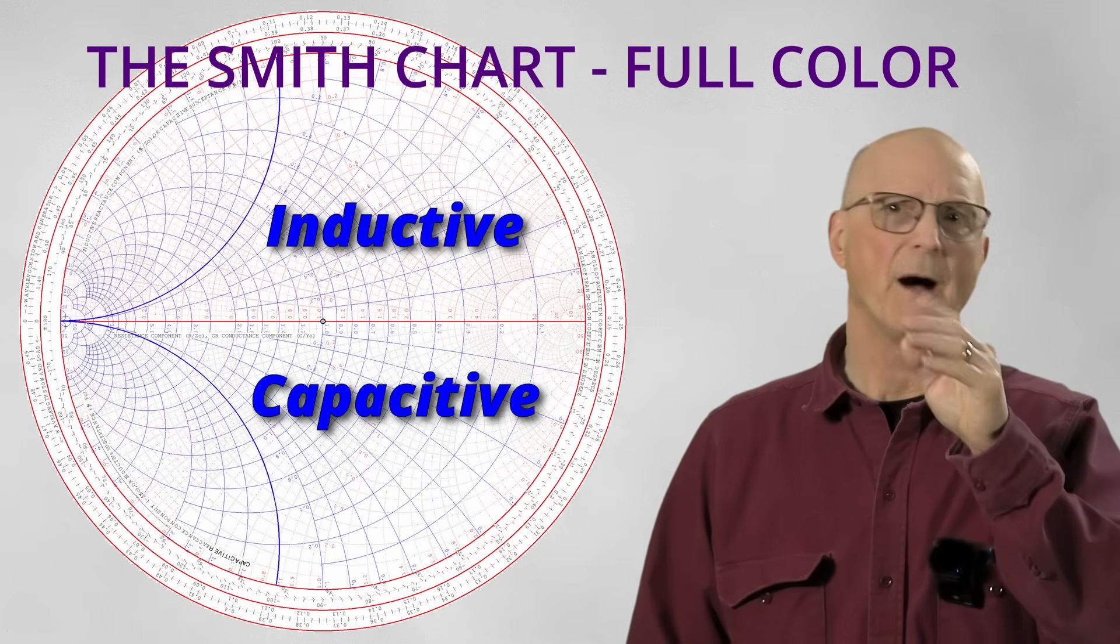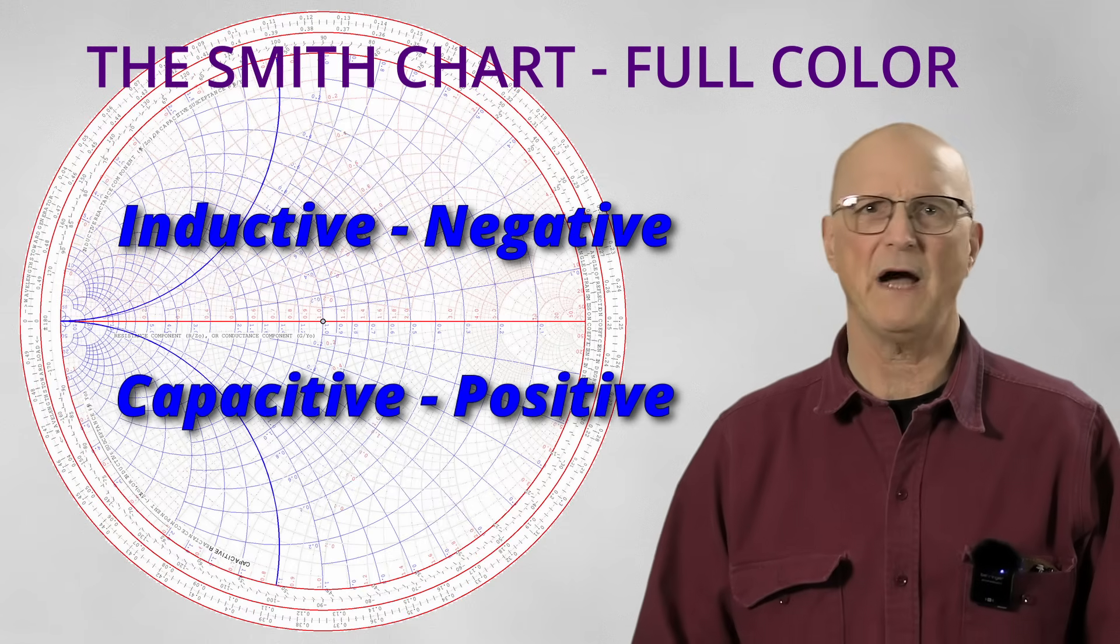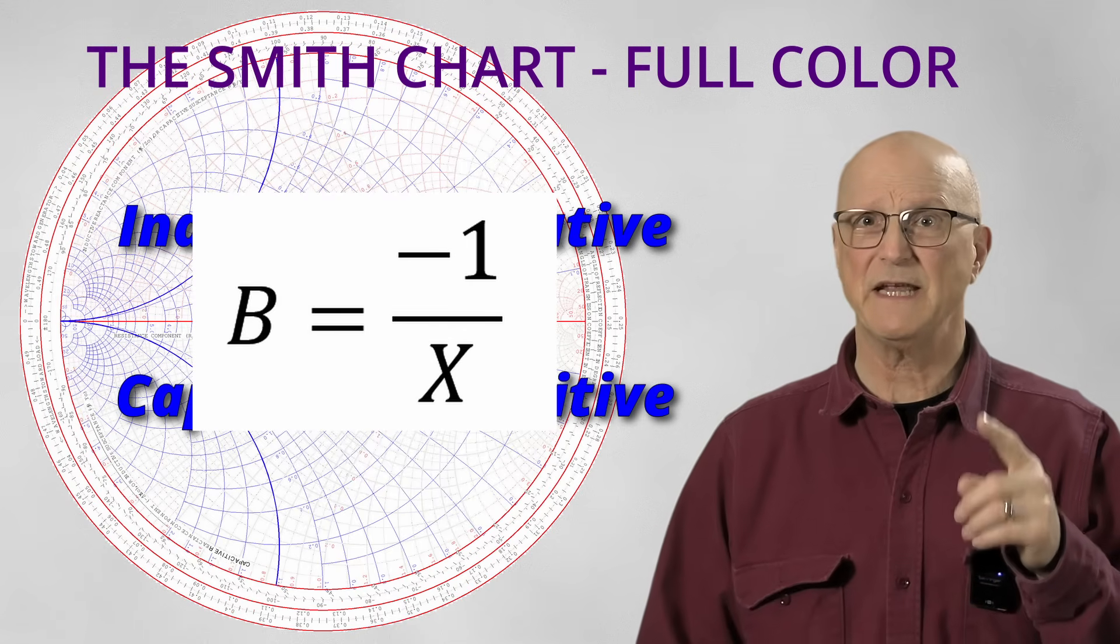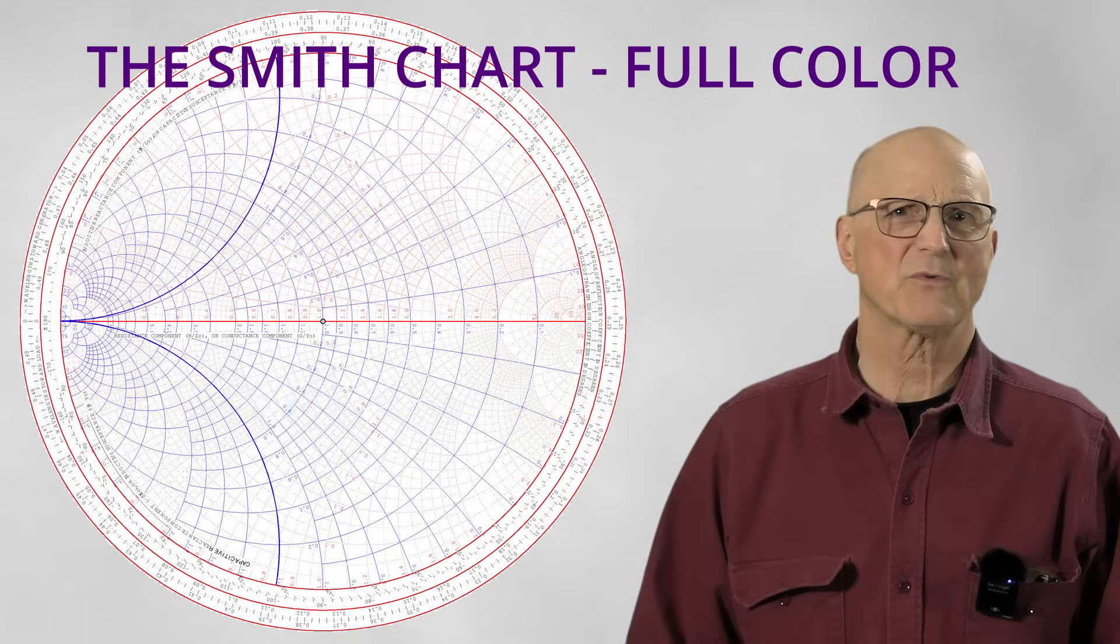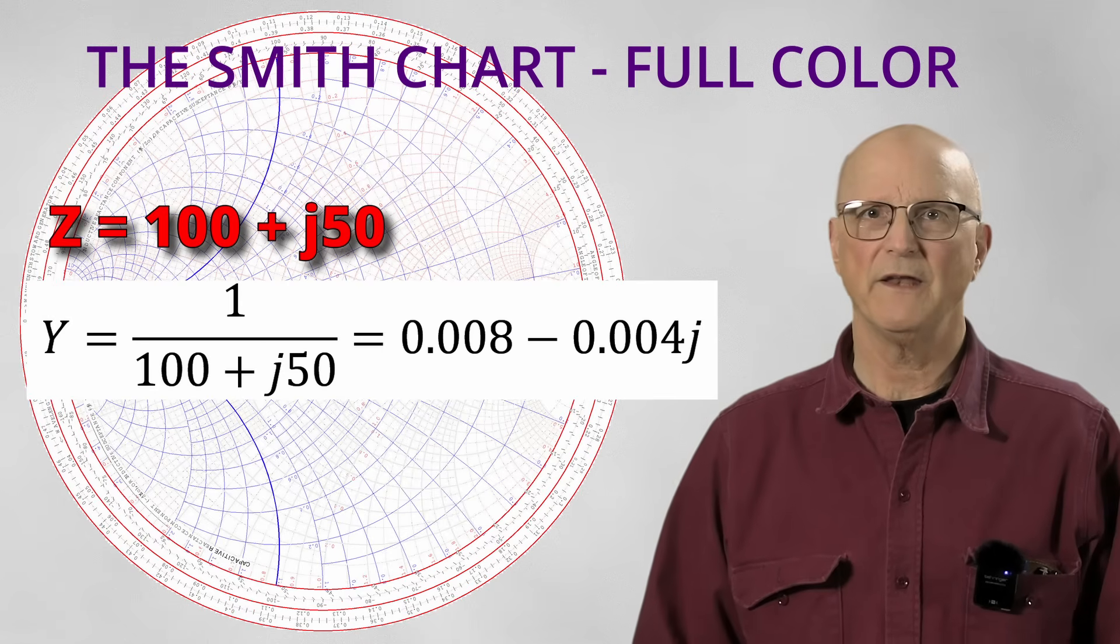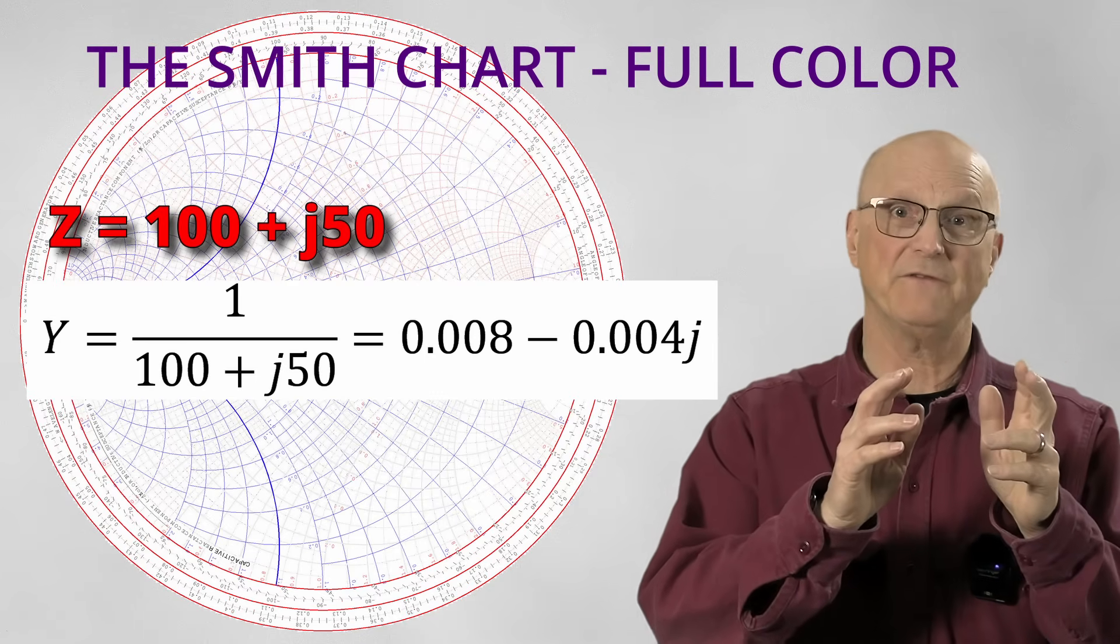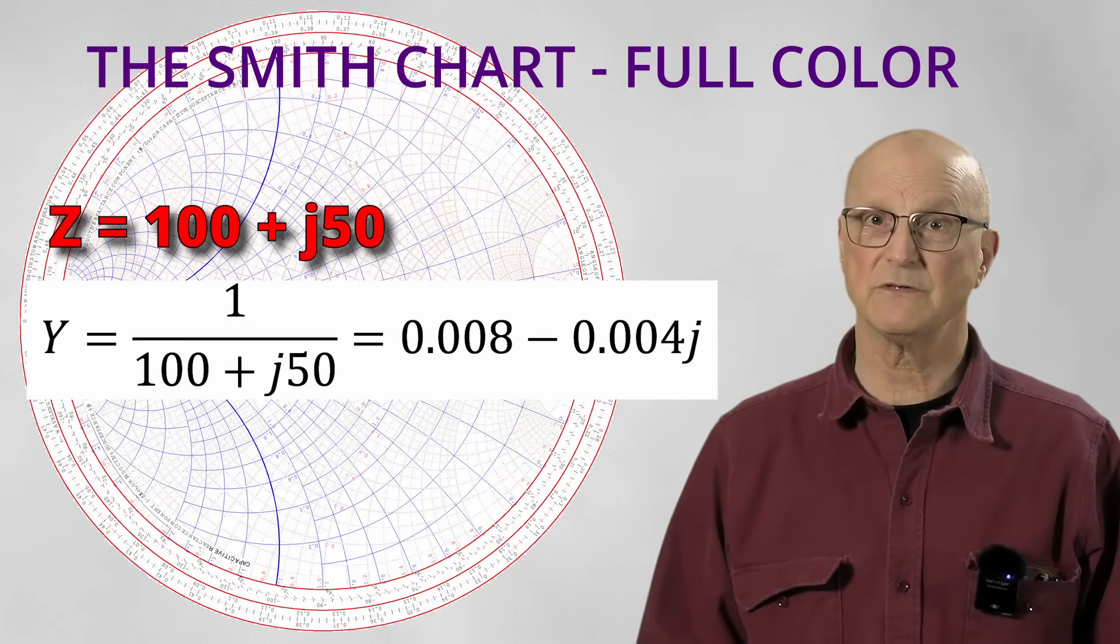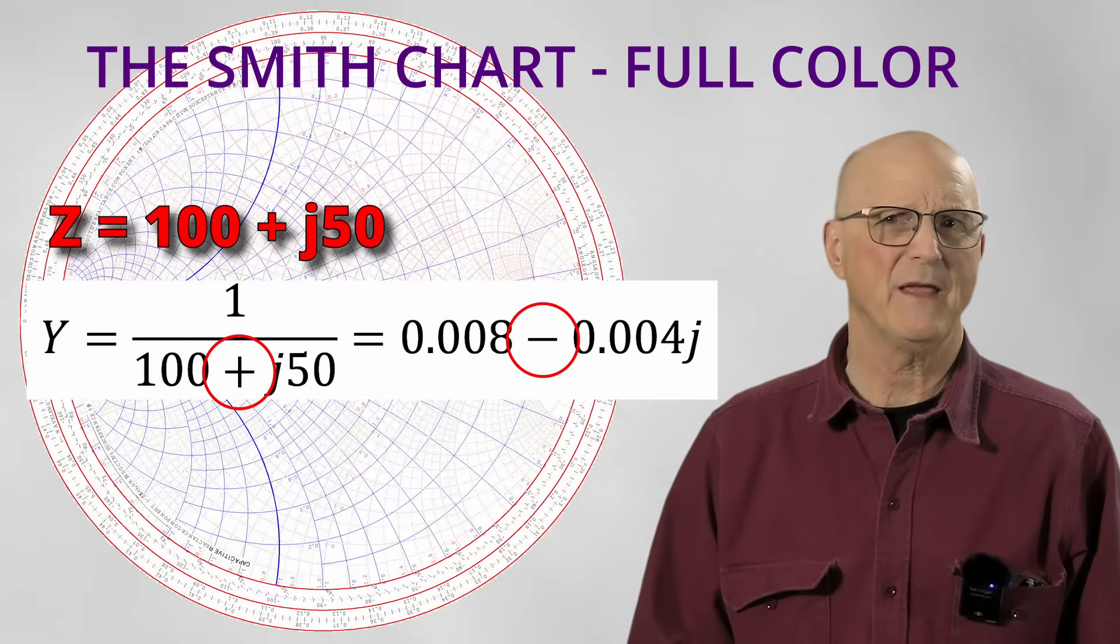The values for susceptance above the equator are negative and the values below the equator are positive. And you say, well, why is that? This is because the susceptance value is equal to minus one divided by the reactance value. So how does this work with our example impedance of 100 plus J50? The admittance equals one divided by the impedance. So we have one divided by 100 plus J50, which gives us a value of 0.008 minus 0.004j.